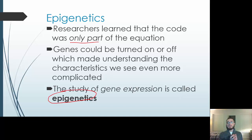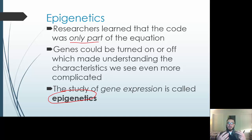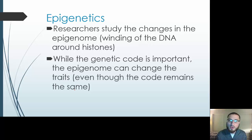Previously, when we were just looking at the genome, it seemed a lot less complex. But once we started wrapping up the Human Genome Project, we started to see that different people might have the same gene, but one person expresses the gene and the other doesn't show that characteristic — and it's all because of epigenetics. Some genes can be expressed and some aren't. Researchers now study changes in the epigenome — whether genes are turned on or off — and it involves the winding of the DNA around proteins called histones. The epigenome can change the traits even though the genetic code remains the same.